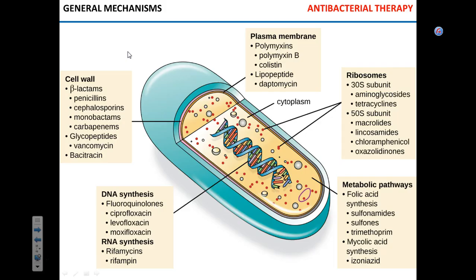As we mentioned previously, there are certain general considerations for selecting a proper antibacterial drug — based on its ability to kill or inhibit the growth of bacteria, based on the spectrum of activity, whether it's broad spectrum or narrow spectrum, or based on bioavailability when delivered orally or parenterally. Now we're going to talk about the general mechanisms that different drugs have in relation to killing or stopping the reproduction of bacteria.